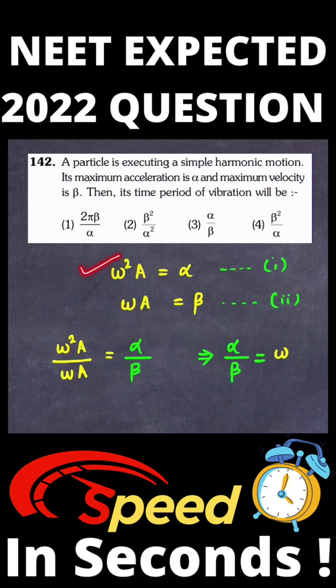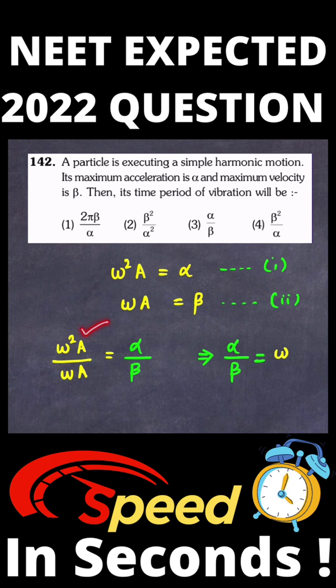So omega squared times a equals alpha — equation number one, and omega times a equals beta — equation number two. On dividing equation one by equation two, we get omega squared a divided by omega a equals alpha by beta, so the angular frequency omega comes out to be alpha by beta.